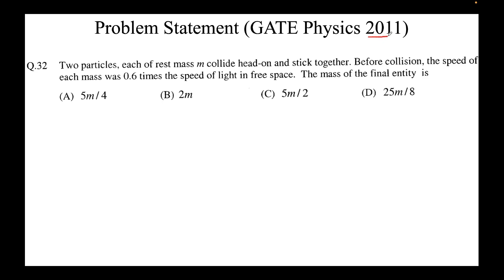The problem statement from GATE Physics 2011 reads as follows: two particles each of rest mass m collide head-on and stick together. Before collision, the speed of each mass was 0.6 times the speed of light in free space. The mass of the final entity is — this is a multiple choice question with one correct answer and we'll need to find the correct one.